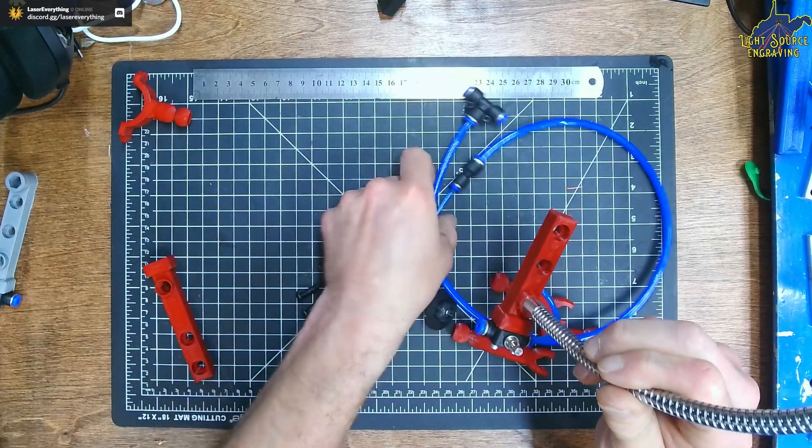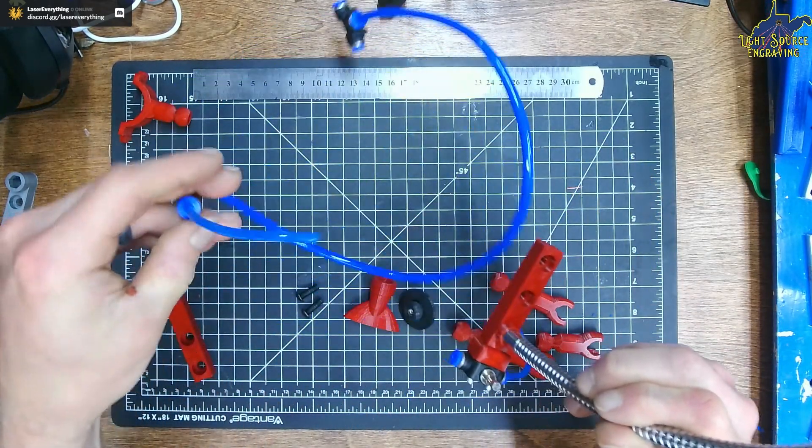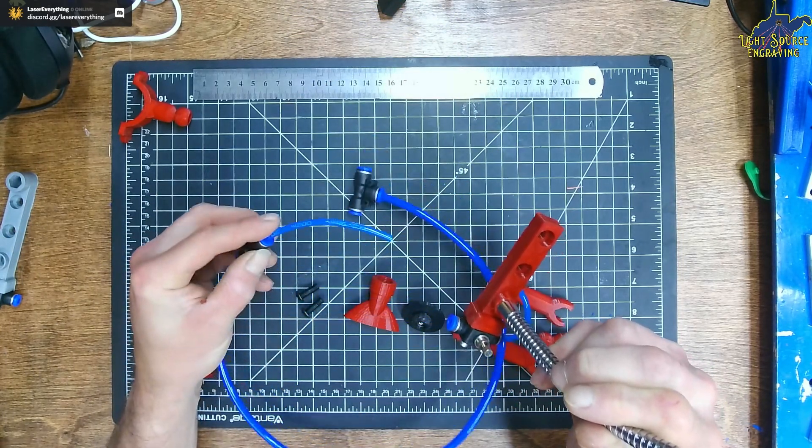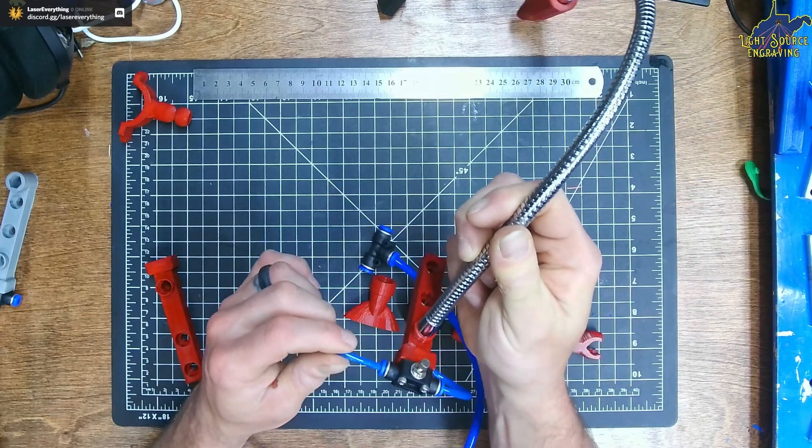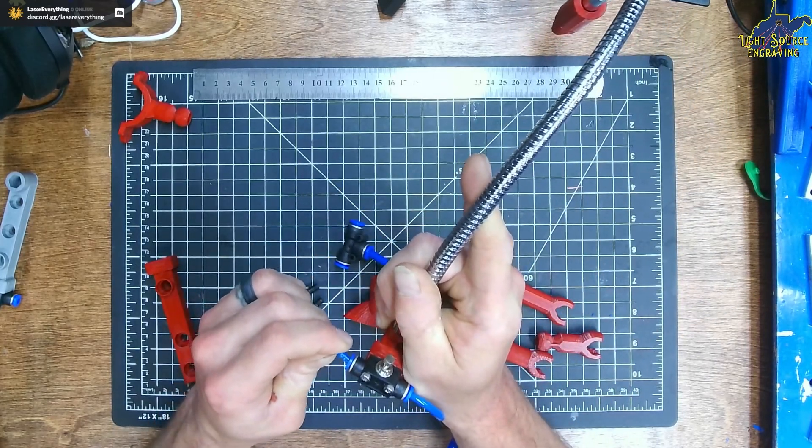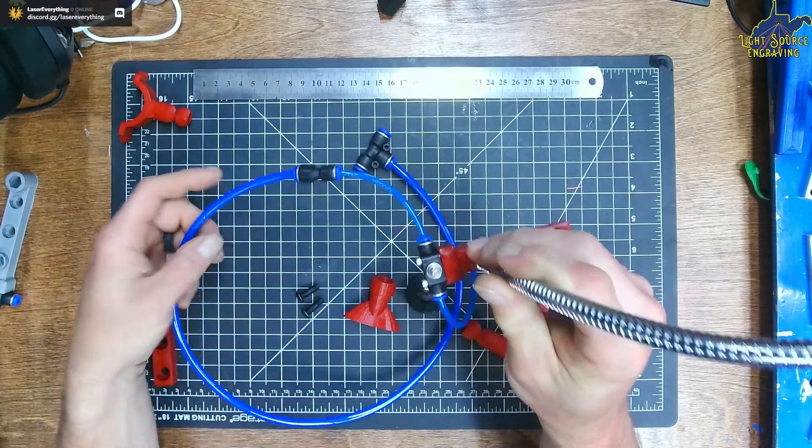Next, connect the small piece of small diameter hose to the left side of the valve. Once you have that step completed, your air assist is ready to mount to your fiber laser bed.